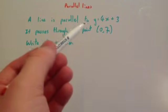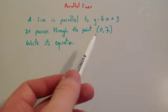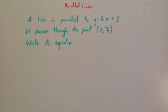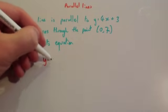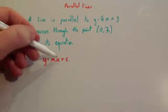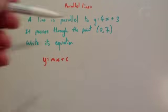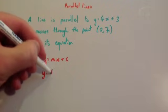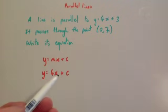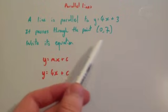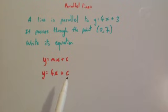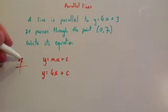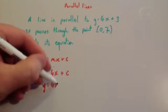A line is parallel to the line Y equals 4X plus 3. It passes through the point (0, 7). Write its equation. Its equation will be in the form Y equals MX plus C, where M is the gradient and C is the Y-intercept. Because it's parallel to this line, its gradient must be 4. So you get Y equals 4X plus C. Now this coordinate (0, 7) tells us it goes through 7 on the Y-axis, so the Y-intercept is 7. Therefore the equation is Y equals 4X plus 7.